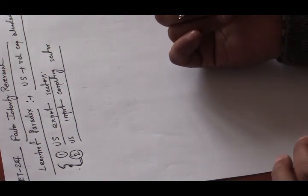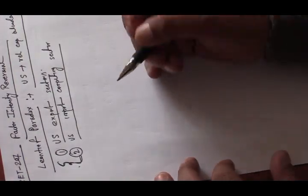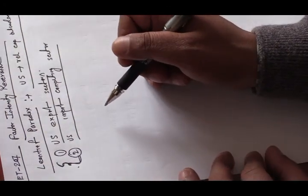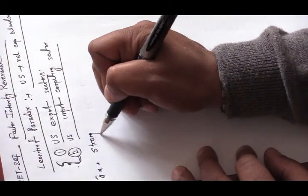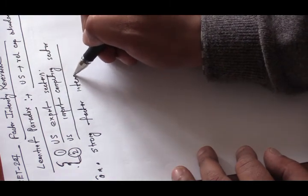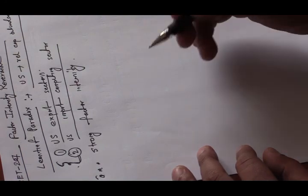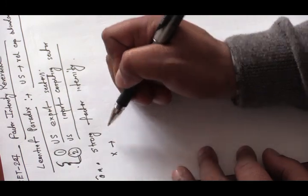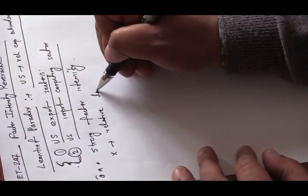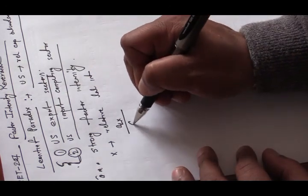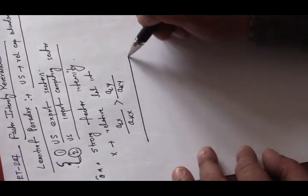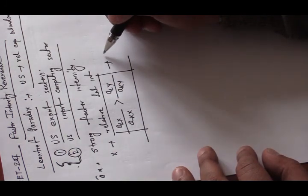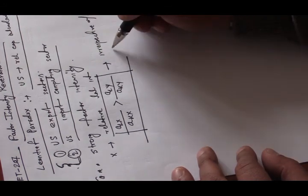Factor intensity reversal is the most important and most valid explanation of the Leontief Paradox. To understand it, we need to recall the assumptions of the Heckscher-Ohlin model. One assumption was strong factor intensity: commodity X is called relatively labor-intensive if a_LX divided by a_KX is greater than a_LY divided by a_KY.